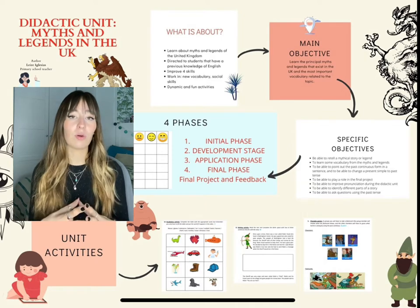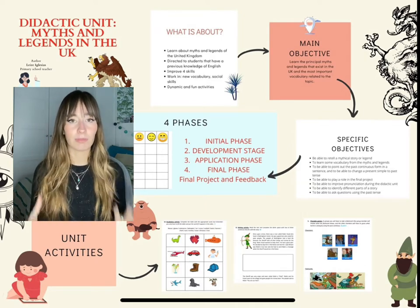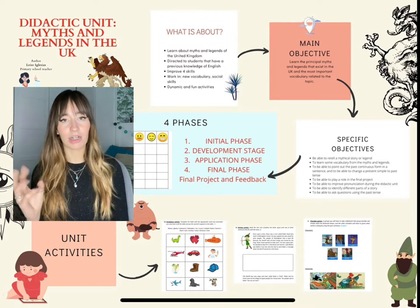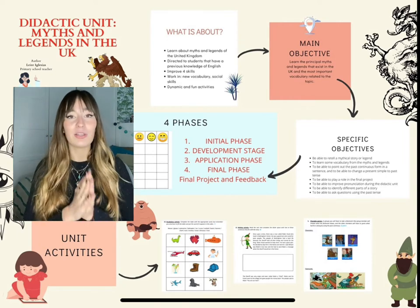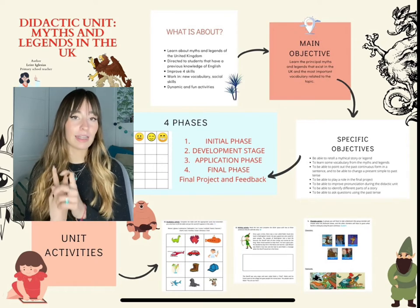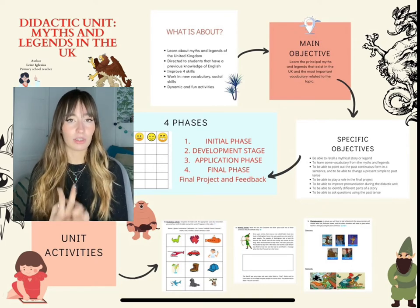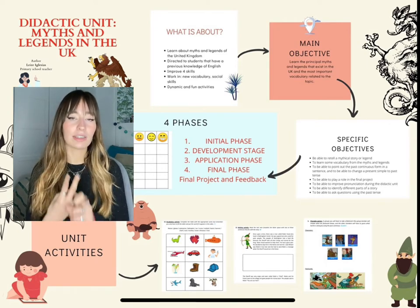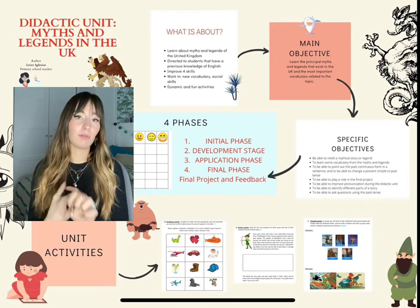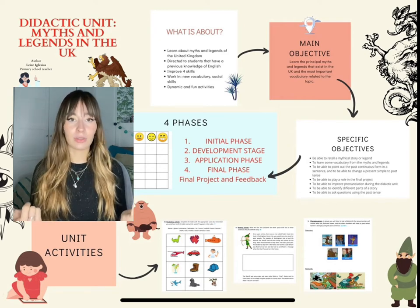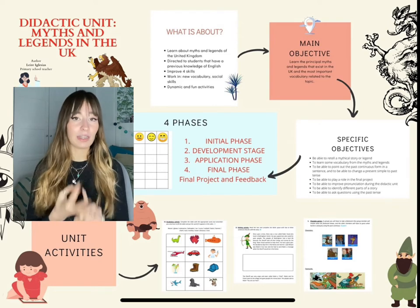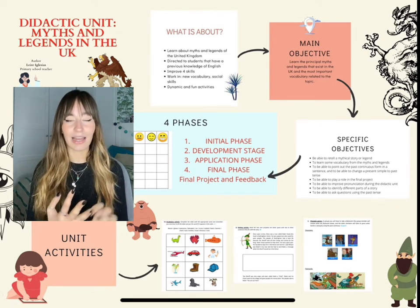Now, what is the aim of this unit? The aim is that students learn the principal myths and legends that exist in the UK and the most important vocabulary related to the topic. Apart from this main objective, there are some specific ones. Basically, students have to be able to retell a mythical story or legend, learn vocabulary from the myths and legends, identify the past continuous form in a sentence, change a present simple to a past tense, play a role in the final project, improve pronunciation during the unit, identify parts of a story, and ask questions using the past tense.